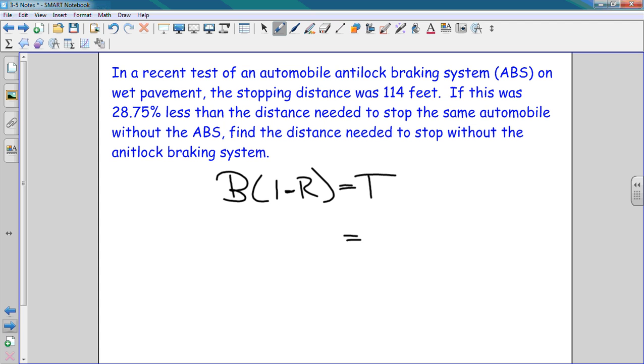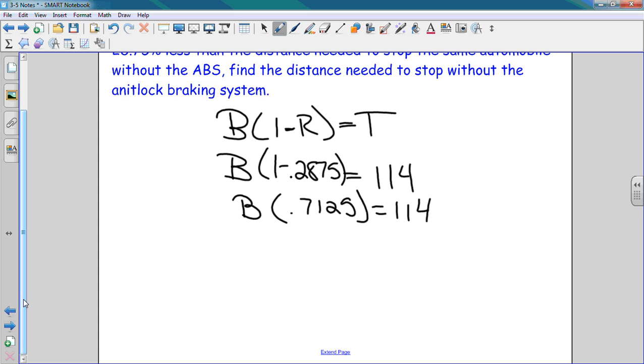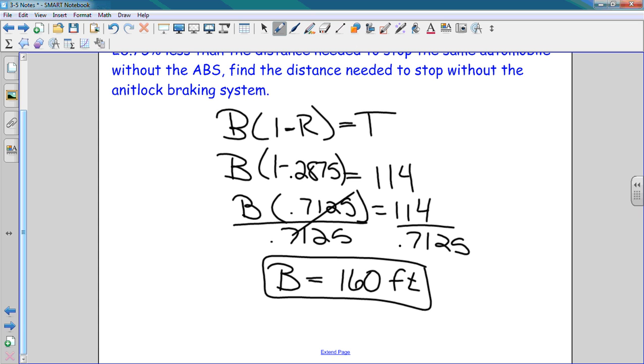114 is my total. That is the distance that the car with the analog braking system traveled, which was a percentage less than what the one without analog braking system traveled. So I have 114 equals B times 1 minus 0.2875, which is B times 0.7125. Divide by 0.7125. The car without analog braking system needs 160 feet. The car with ABS needs 114 feet. That's a pretty big difference. I would suggest ABS for your car.